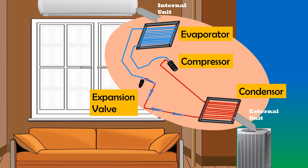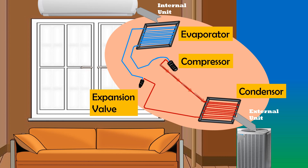The cool liquid refrigerant then flows back into the evaporator through an expansion valve. The evaporator again absorbs heat from the warm air of the room and releases cool air. This cycle continues until it reaches the temperature we have set.